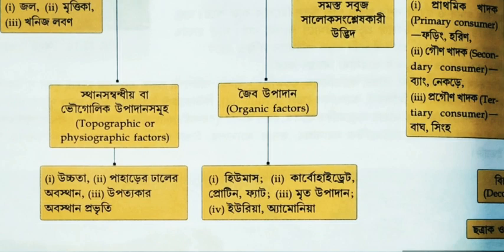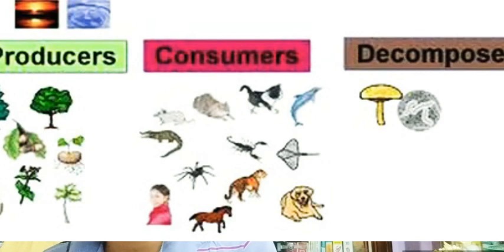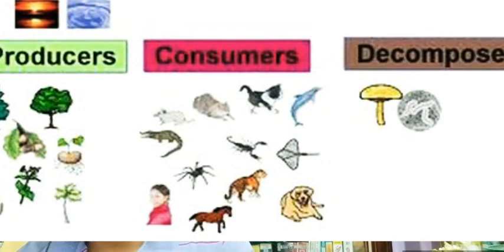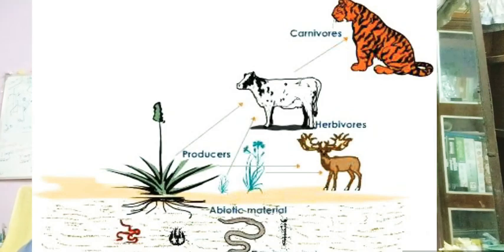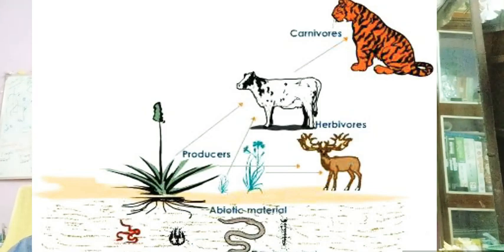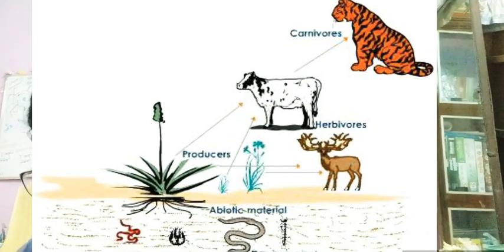The important factor is the biotic components. Biotic components are divided into: producers, consumers, and decomposers. Producers have chlorophyll. Consumers include primary consumers, secondary consumers, and higher-level consumers. Decomposers include bacteria and other microorganisms.